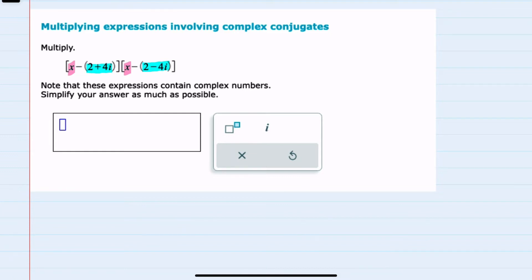I'm just going to multiply here by the FOIL method, or you can think of it as just distribution. Starting with this first x, x times x is x squared.